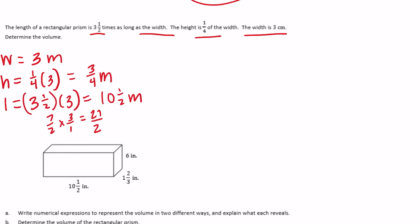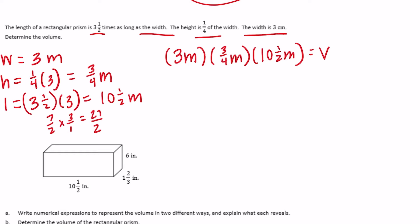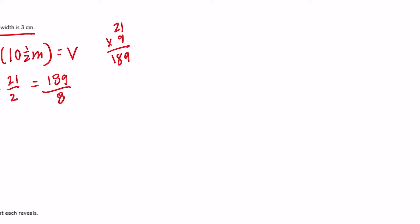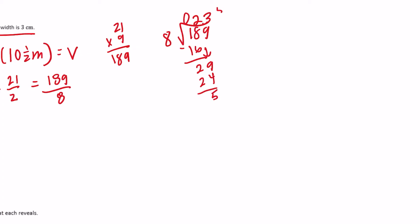Now to find the volume we multiply all of these together: three meters by three-fourths meters by ten and a half meters. Making them all fractions: three times three-fourths times 21 halves. Three times three is nine; nine times 21 is 189; one times four times two is eight. So we get 189 eighths. Converting back: 23 and five-eighths meters cubed.